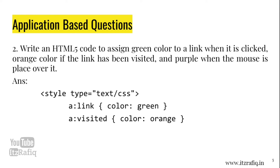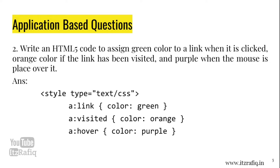Next, a:visited — the visited pseudo-class is used for visited links — with color: orange inside the brackets. Then a:hover — hover is used when the mouse is placed over the link — with color: purple inside the brackets. Then close the style tag.